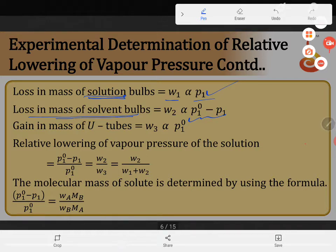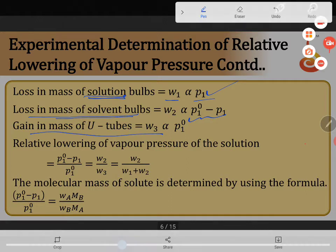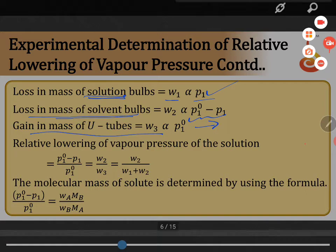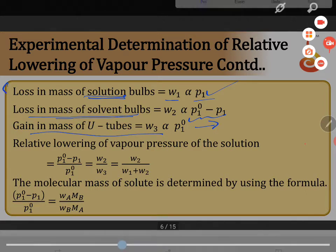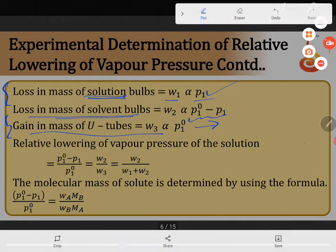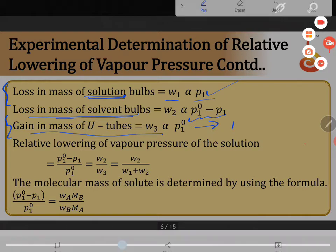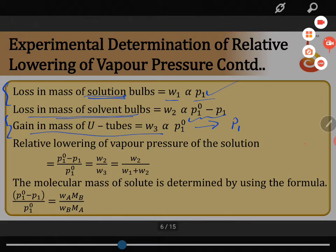Next, gain in the mass of U-tubes W2 is proportional to P1. This is what I explained to you - loss of vapor is equal to gain of vapor. Here, this is the total loss. I am adding these two things. So if I add these two things, the gain is P01.